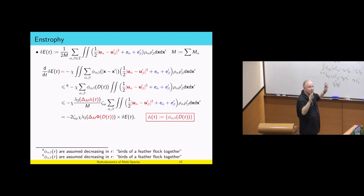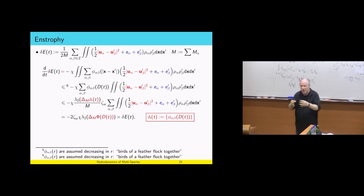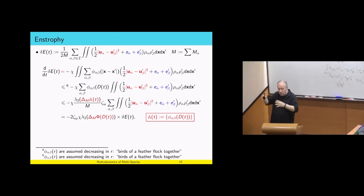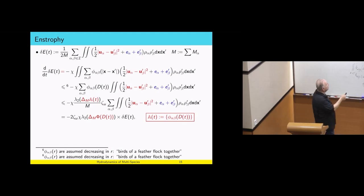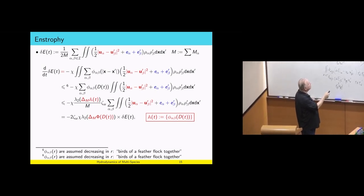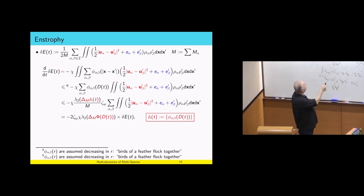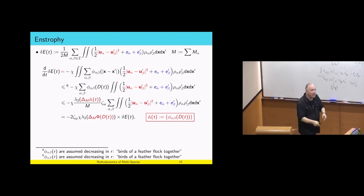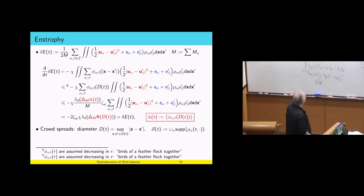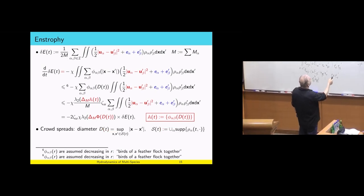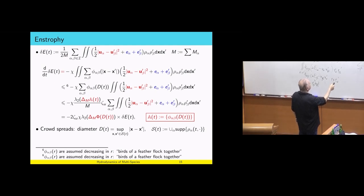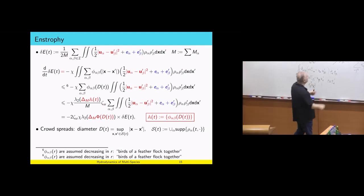If there is one thing to remember, it's how everything fits together. We have a matrix — an array of interactions — and we need to find the second eigenvalue of this array. At the end, we get the time derivative of the fluctuation of the energy equal to minus a coefficient times the fluctuation of the energy. So the fluctuation will go to zero and everything aligns, provided we know something about the second eigenvalue of the weighted matrix, the diameter, and the array of interactions.